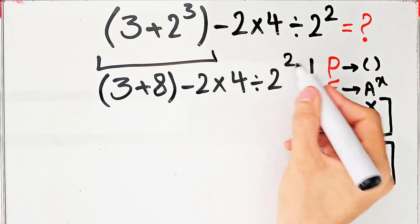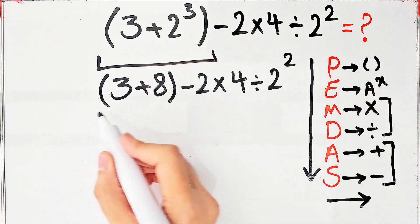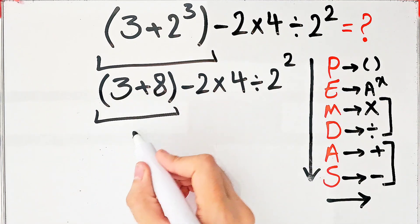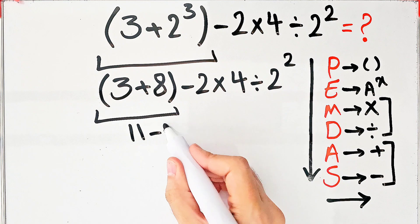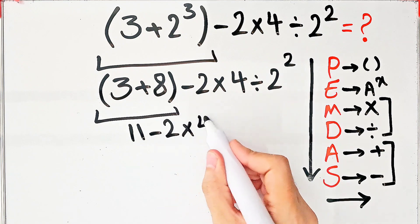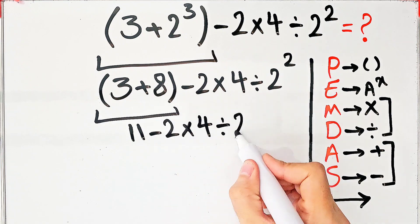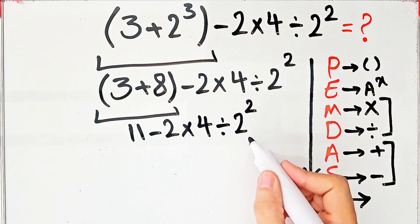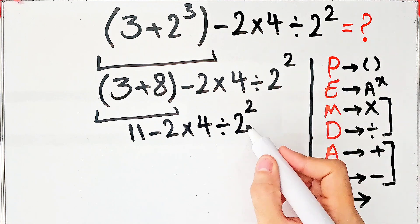Again we simplify the parentheses. 3 plus 8 equals 11. Now we have 11 minus 2 times 4 then divided by 2 to the power of 2. In this step we simplify this exponent. We have 11 minus 2 times 4 then divided by 4.